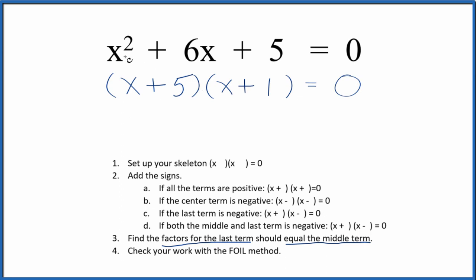And now we've factored the equation x squared plus 6x plus 5 equals 0. 5 plus 1 gives us that 6 there. But we really should check our work with the FOIL method here.